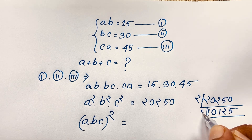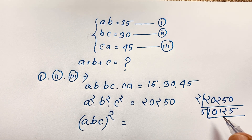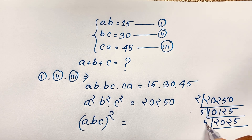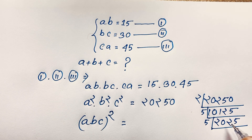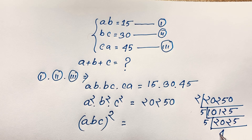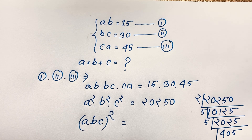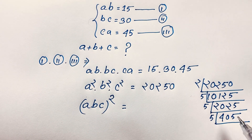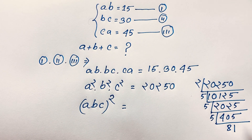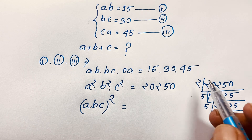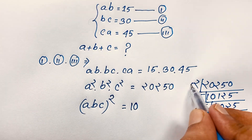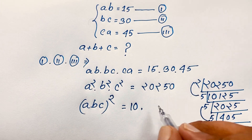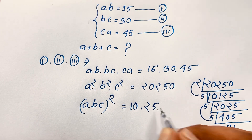Now let's factor 20,250. Dividing by 2 gives 10,125. Dividing by 5 gives 2,025. Dividing by 5 again gives 405. Dividing by 5 once more gives 81. So 20,250 = 2 × 5 × 5 × 5 × 81, which equals 10 × 25 × 81.